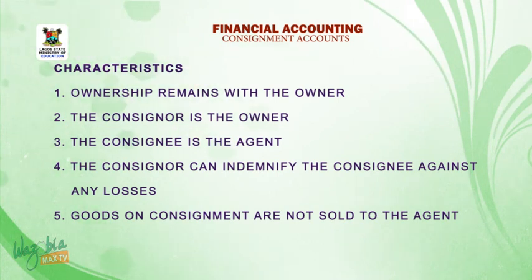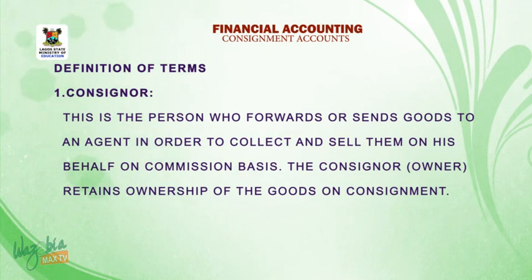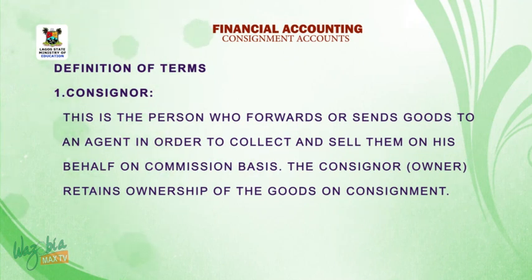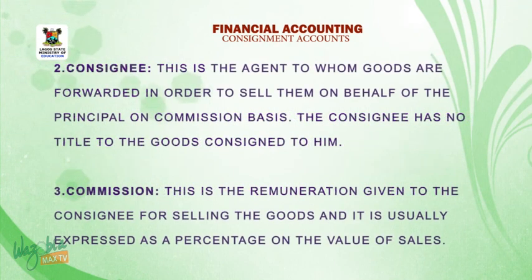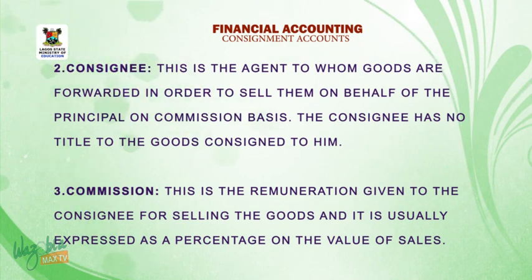Five, goods on consignment are not sold to the agent. Definition of terms: one, consignor — this is the person who sends goods to an agent in order to collect and sell them on his behalf on a commission basis. The consignor, that is the owner, retains ownership of the goods on consignment. Two, consignee — this is the agent to whom goods are forwarded in order to sell them on behalf of the principal on a commission basis. The consignee has no title to the goods consigned to them.